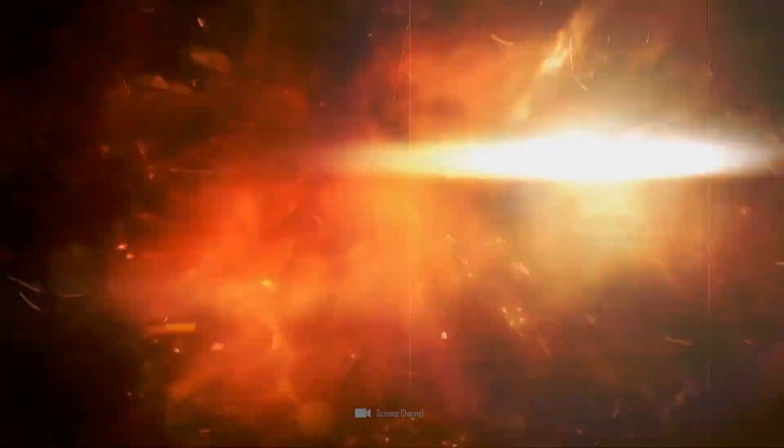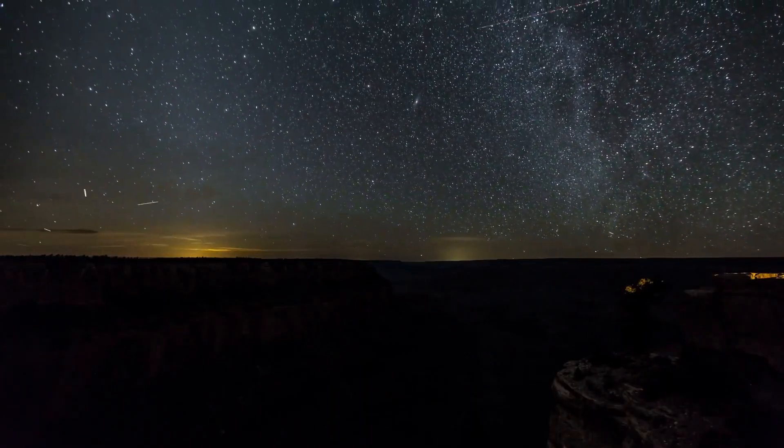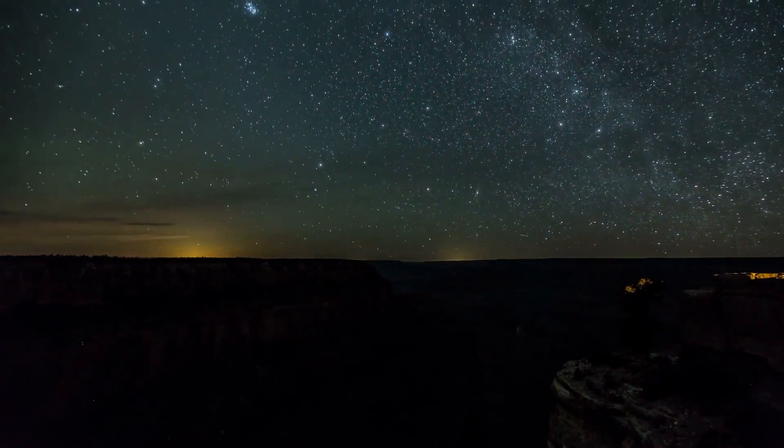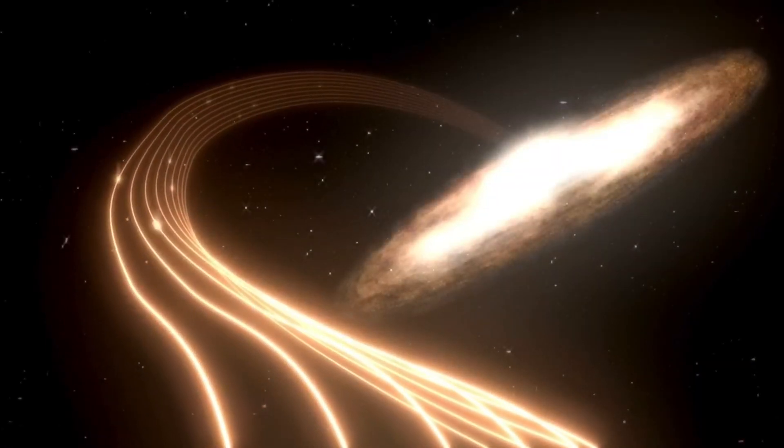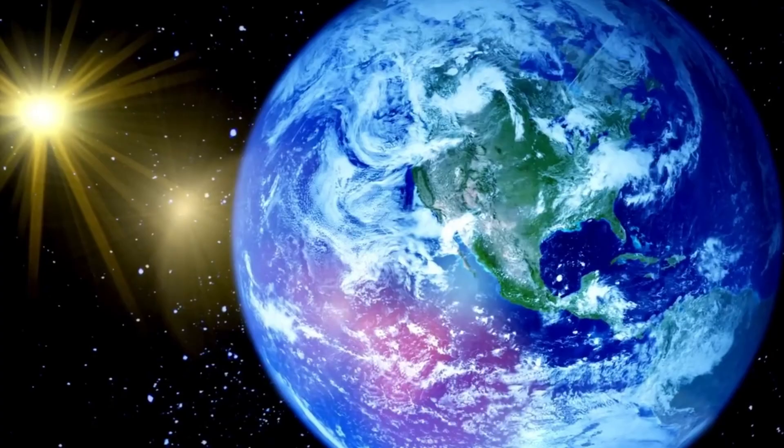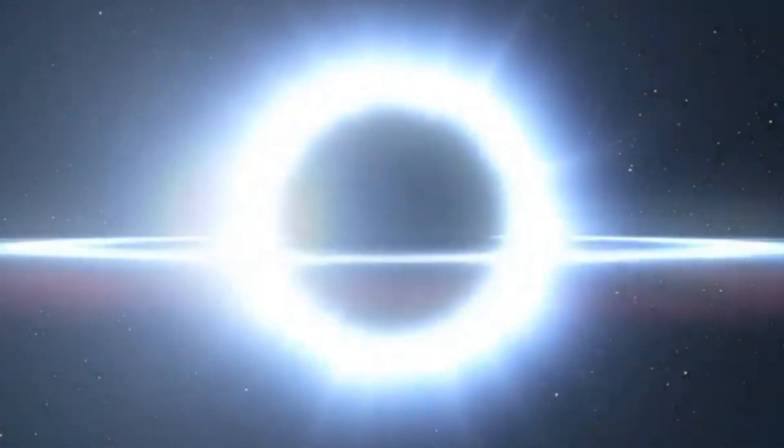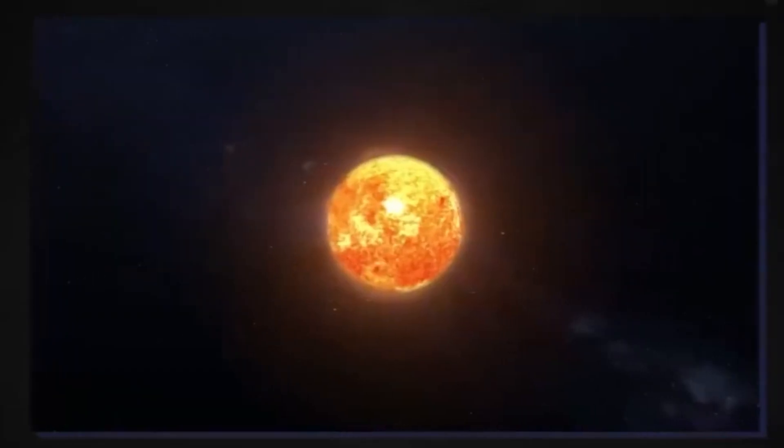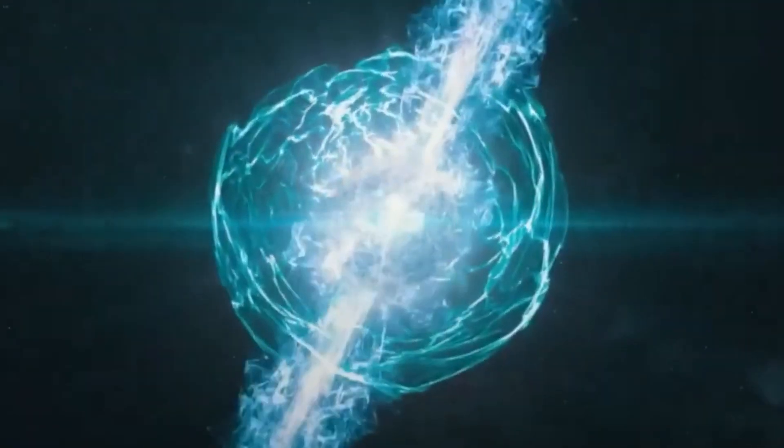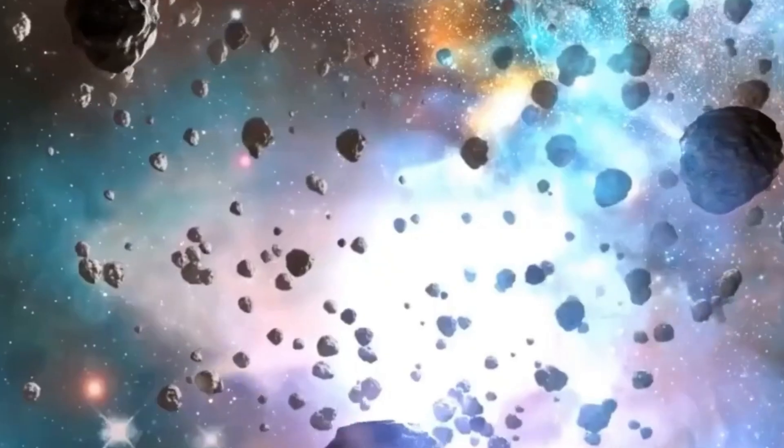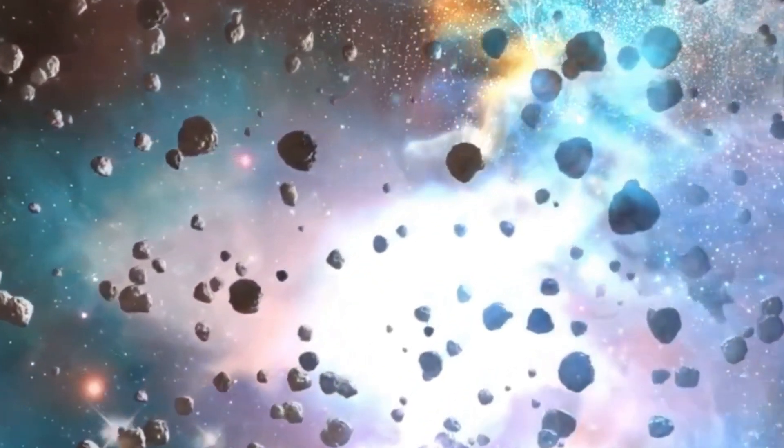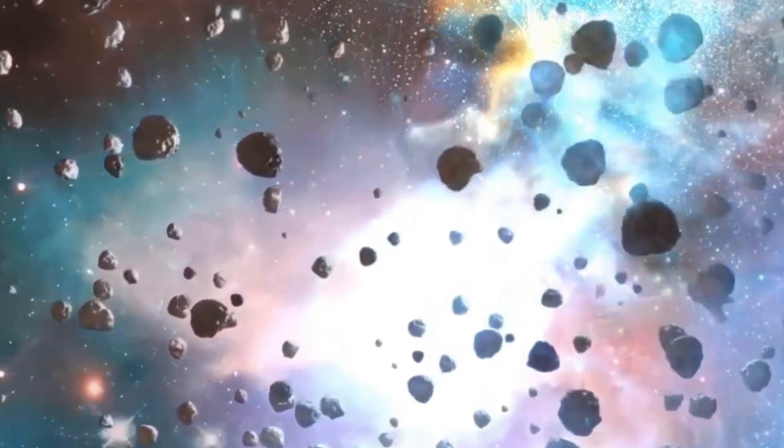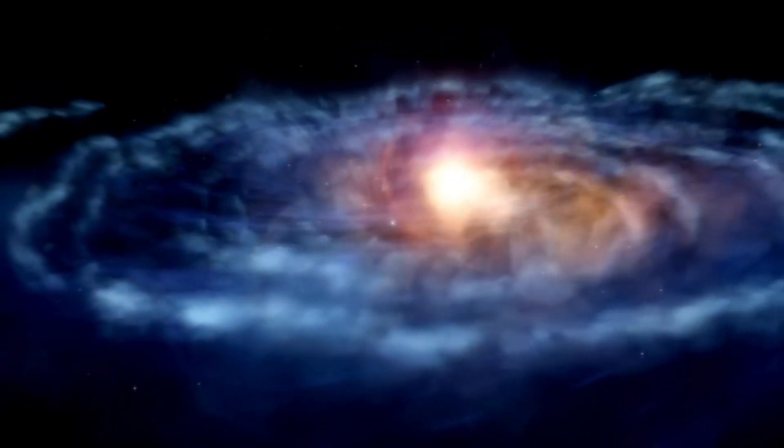16 times bigger than the Sun is Betelgeuse. Located 548 light-years distant, this supergiant star has a solar luminosity of 126,000. The star is cooler than the Sun with a temperature of 3,600 Kelvin. Visible light makes up just 13% of Betelgeuse's total emitted energy.